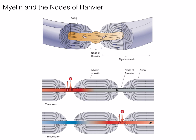By insulating the axon, myelin increases the conduction of action potentials. The nodes of Ranvier are breaks in the myelin sheath that allow for ion exchange and the generation of new action potentials. Action potential propagation via myelin and the nodes of Ranvier is observed to hop from node to node, similar to skipping down a sidewalk. This skipping is known as saltatory conduction.